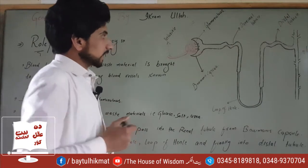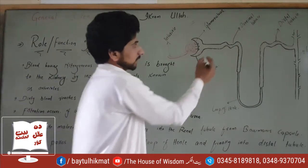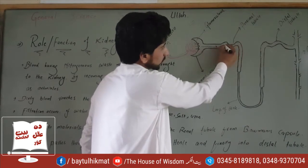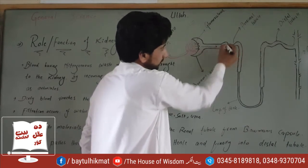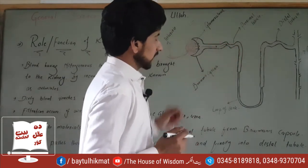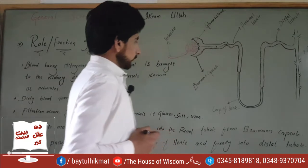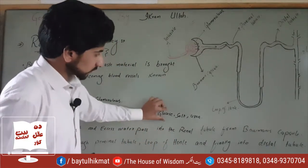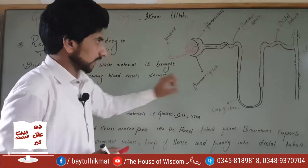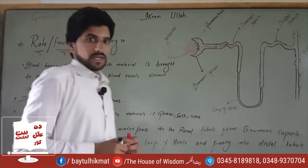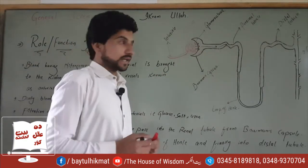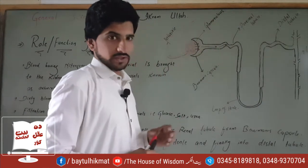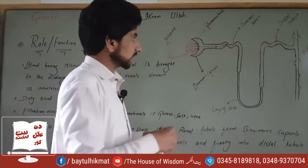The glomerular filtrate passes into the proximal convoluted tubule. The waste material including glucose, salt, urea, and water is present at this stage and will undergo reabsorption.